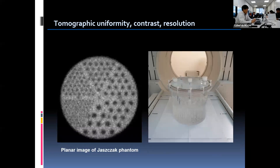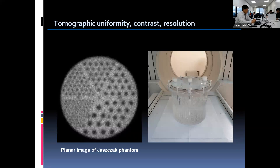This is the planar image of the rod segment in the bottom of the Jaszczak phantom. We get this image prior to the SPECT acquisition, because this can serve as a reference image when evaluating tomographic spatial resolution. For the acquisition, place the phantom on the detector with the rods at the bottom, as described in the image.